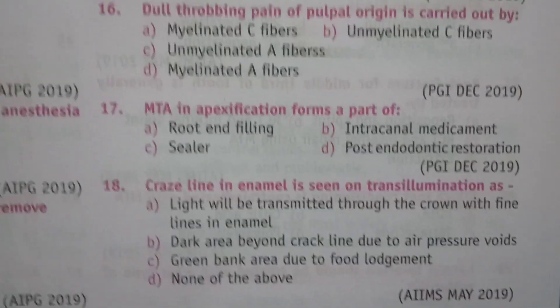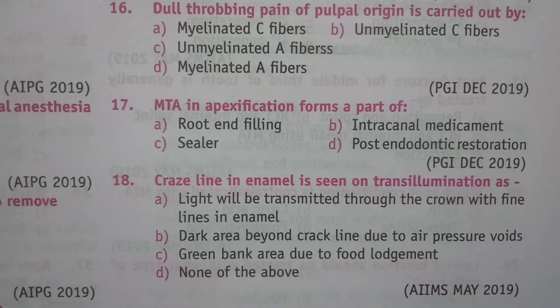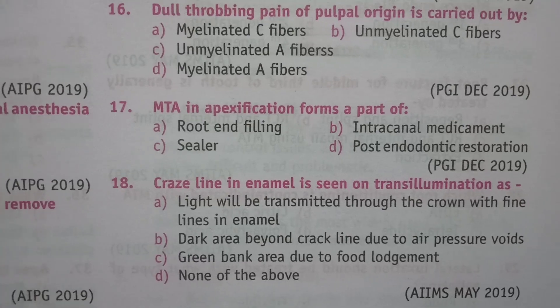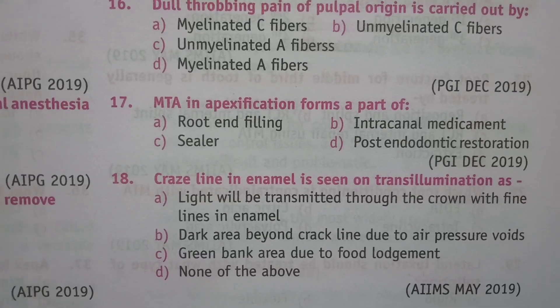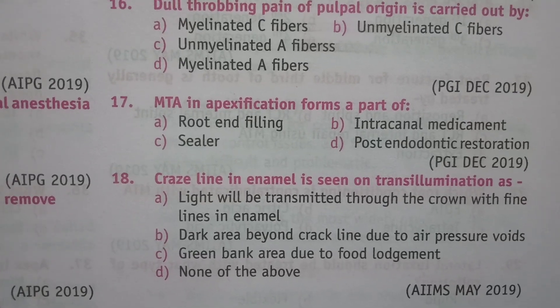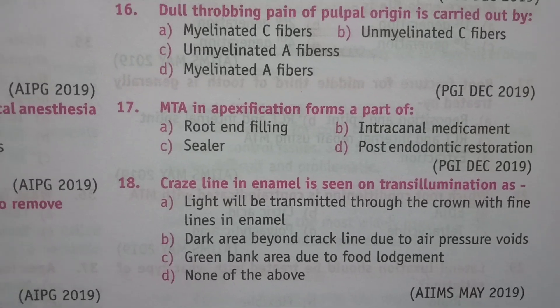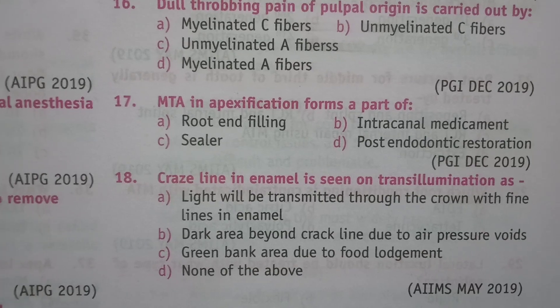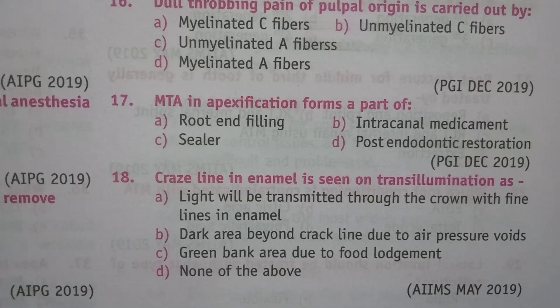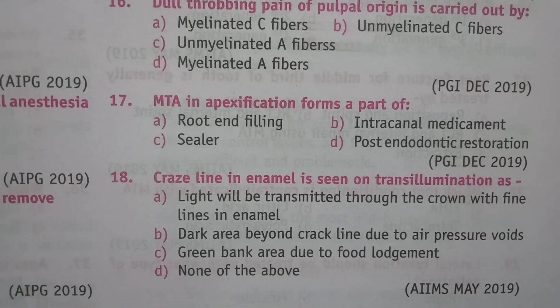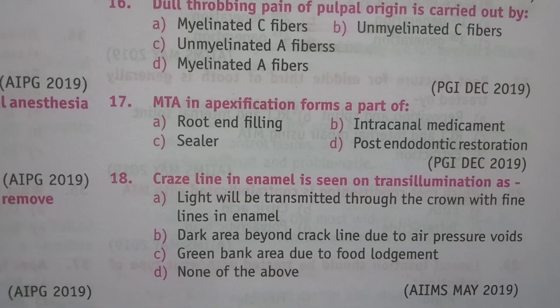Next question: craze line in enamel is seen on transillumination as what? Option A — light will be transmitted through the crown with fine lines in enamel.